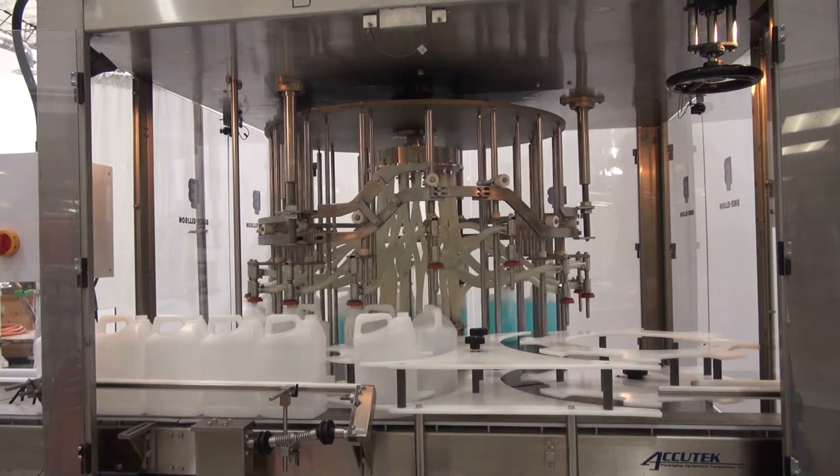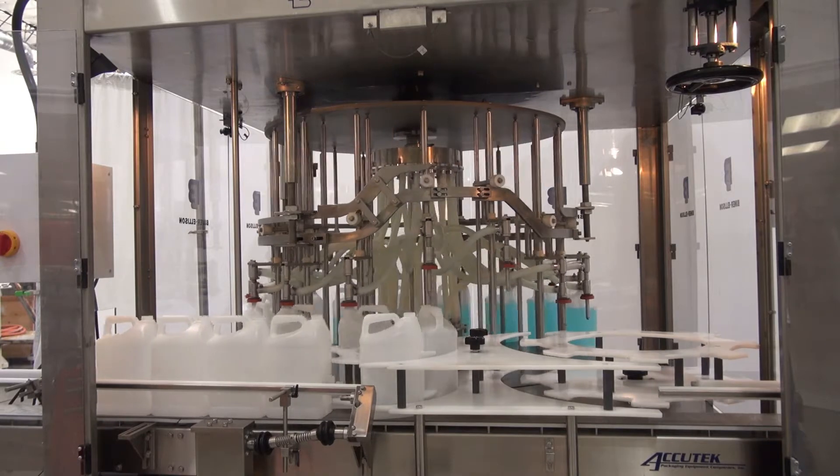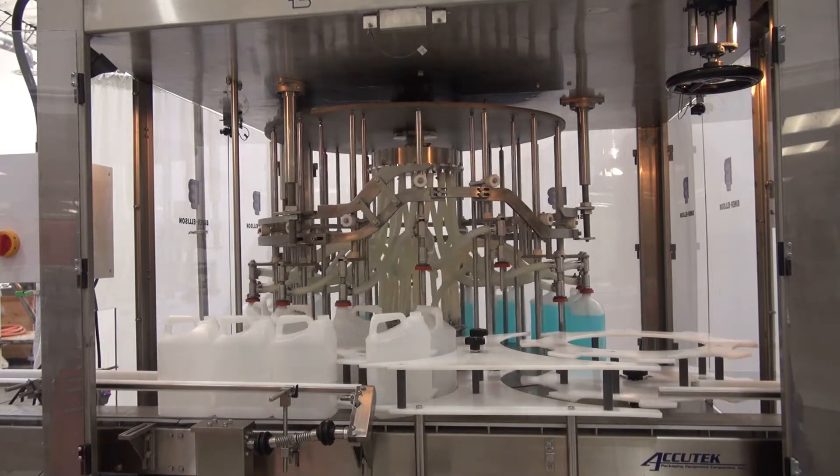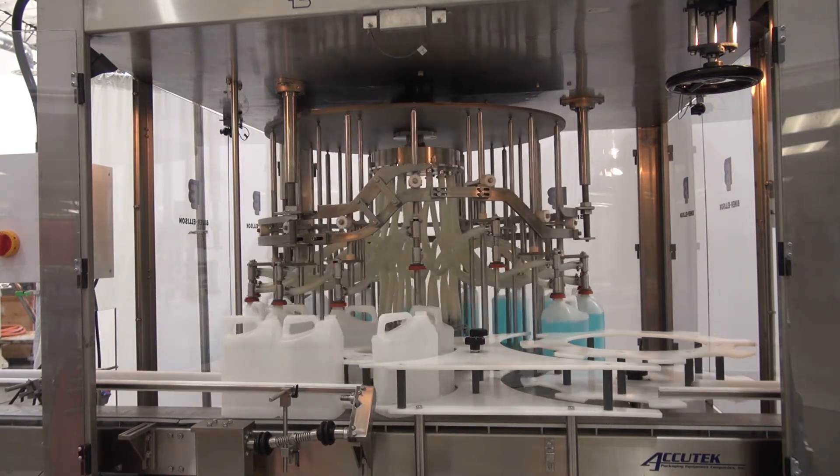Biner Ellison Rotary Overflow Fillers can accommodate all types of containers comprised of rigid plastic, metal, and glass ranging in size from ounces to gallons.